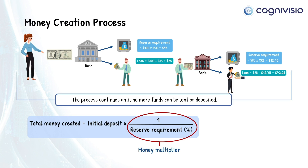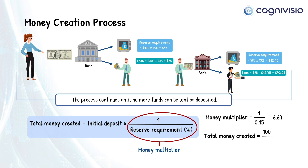In our example, the money multiplier is 1 divided by 0.15, which is equal to 6.67, so the total money created is $100 divided by 0.15, which is equal to $667.